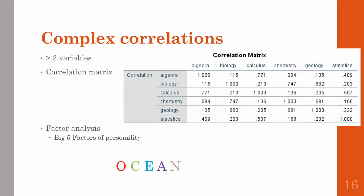You can calculate correlations between each pair of those variables and arrange them in a table. The diagonal entries are all ones because anything correlated with itself is automatically 1. For instance, the correlation between algebra and chemistry is really tiny at 0.08, but the correlation between algebra and statistics is much higher at 0.41.